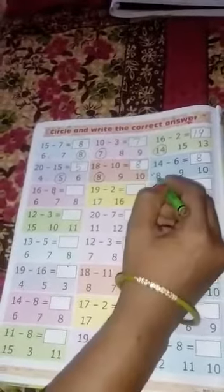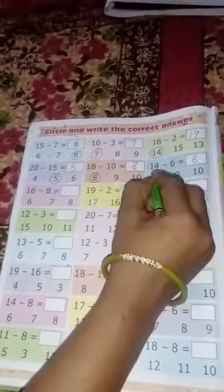14 minus 6. 14 में 6 जाएगा तो how many left? 8. यहाँ क्या लिखेंगे? 8. और हम देखते हैं कि 8 यहाँ पर right answer कौन सा है? 8, 9, 10. 8 is the right answer. तो हम लोग circle करेंगे 8 को.